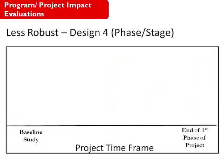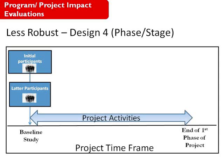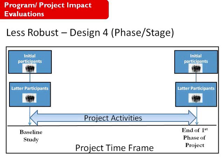Design 4 is also less robust and is particularly for projects that have phases or stages — that is, activities will be phased in among participants. A baseline is conducted among two groups: those individuals or households who will benefit from the initial intervention, and also those latter participants who will only begin benefiting after the end of the first phase. After the baseline, activities occur. At the end of the first phase, a follow-up study is conducted among the initial participants and also those participants who will now begin benefiting in the second phase.